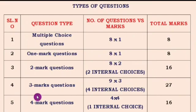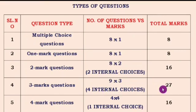Next are the 3-mark questions. There will be 9 questions, each carrying 3 marks, and here 4 internal choices are provided. You can choose whichever question you know best and answer that. For this section you will get 27 marks.